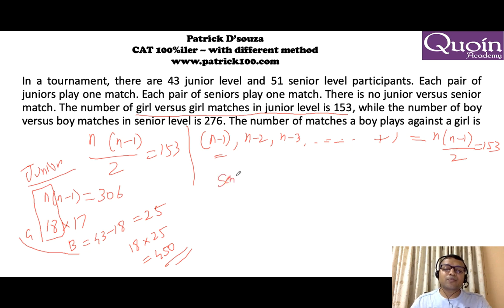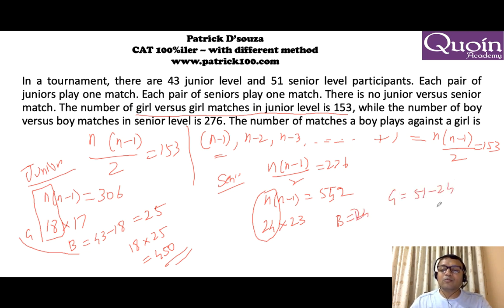Now, if you look at the senior level, they have said boy versus boy matches is 276. Same concept N into N minus 1 will give you 276. So N into N minus 1, if you solve it, gives you 552. Now, you know that 24 square is 576, 23 square is something 529. So this is 24 into 23 because it is between 24 square and 23 square. So N becomes 24. N becomes 24 means number of boys is 24. So, number of girls will become 51 minus 24 which is 27.